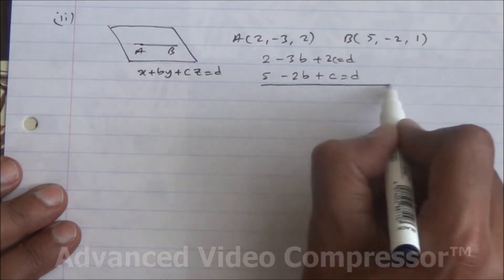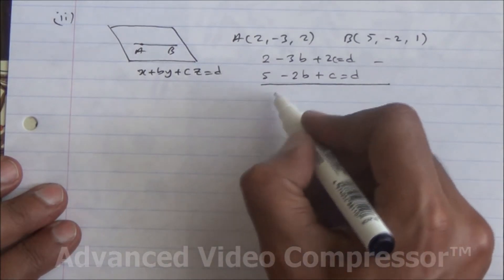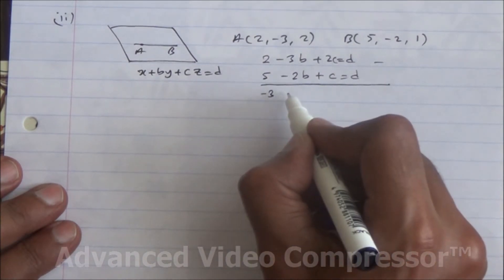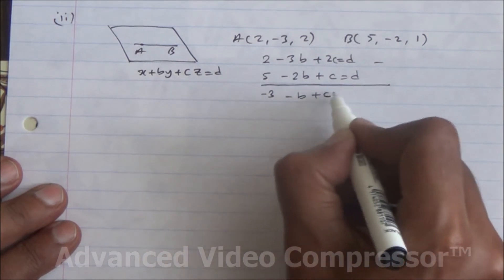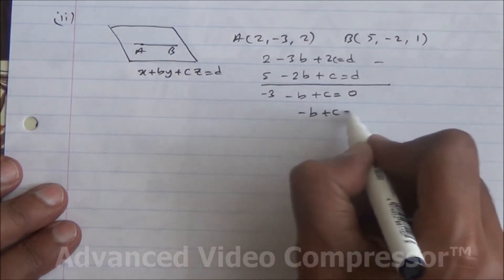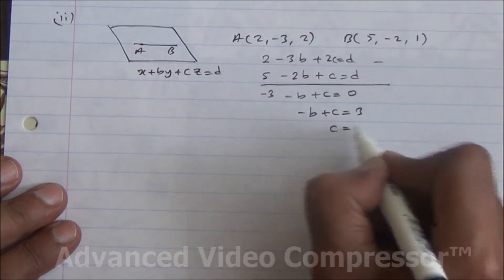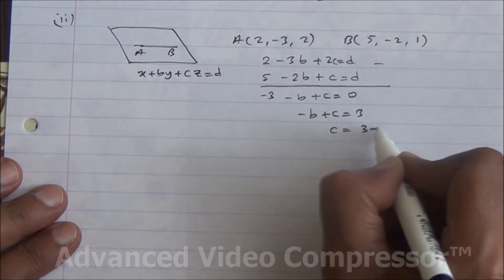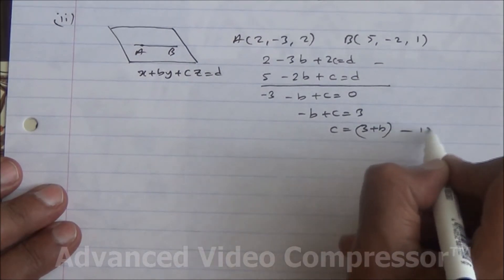Since D is common to both equations, we subtract them. This gives -3 - b + c = 0, which means -b + c = 3, or equivalently c = 3 + b. That is our first equation relating b and c.